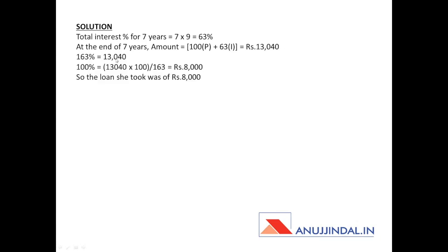So we have the equation: 163 percent equals 13,040 rupees. Using the unitary method, 100 percent equals 13,040 × 100 ÷ 163, which comes out to be 8,000 rupees. Since 100 percent represents the principal, the loan amount Madhu took was rupees 8,000.